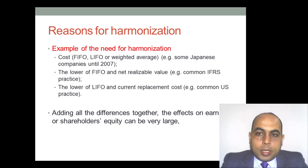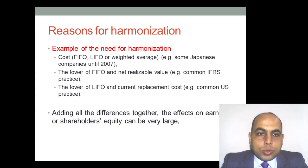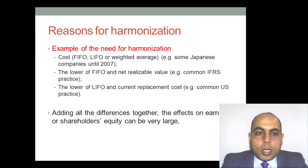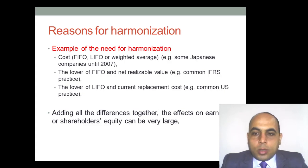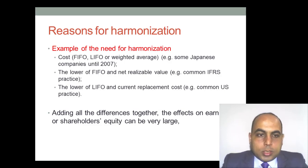For example, some Japanese companies until 2007 had alternatives to adopt first-in first-out, last-in first-out, or weighted average to evaluate their ending inventory. Somewhere else, the lower of first-in first-out and net realizable value is common IFRS practice in general.